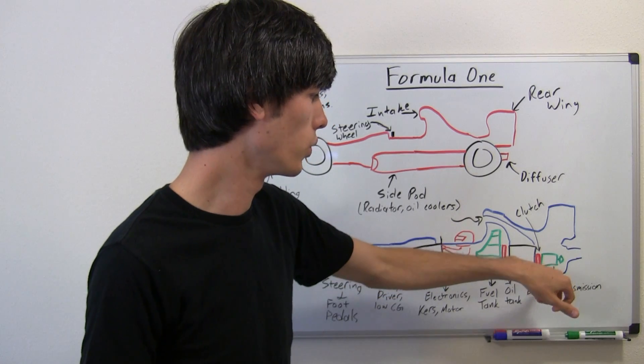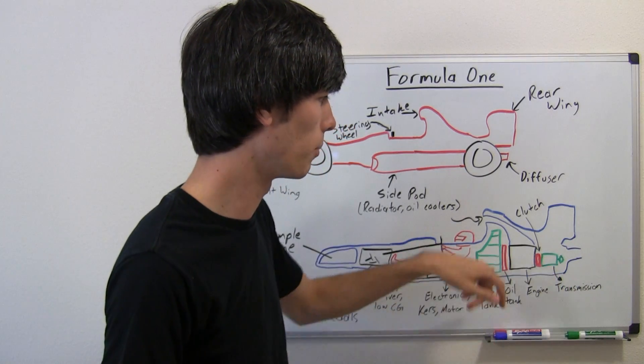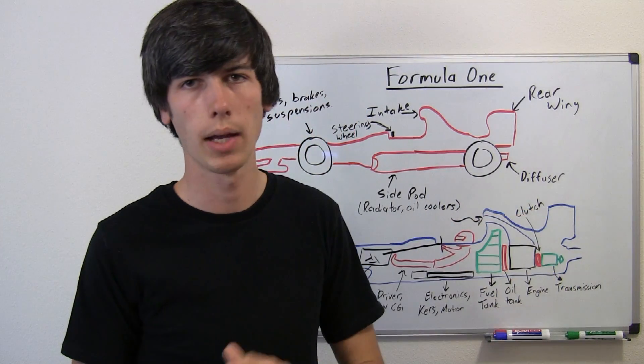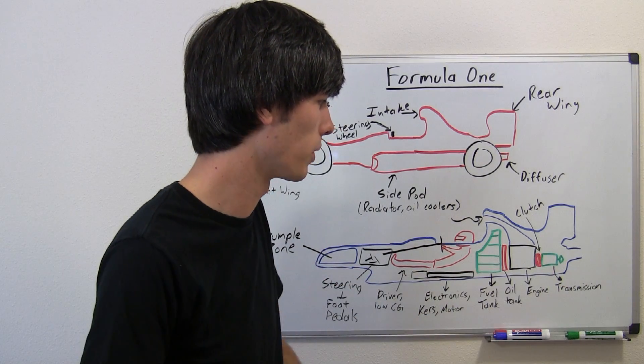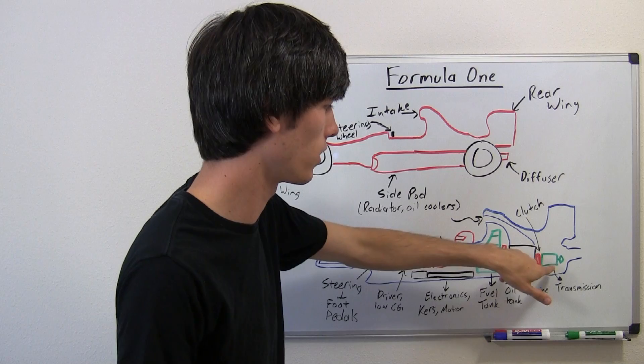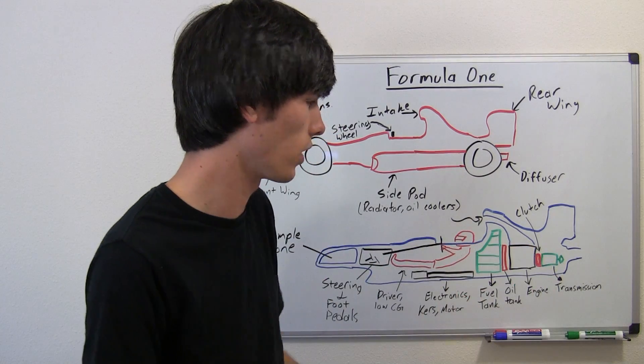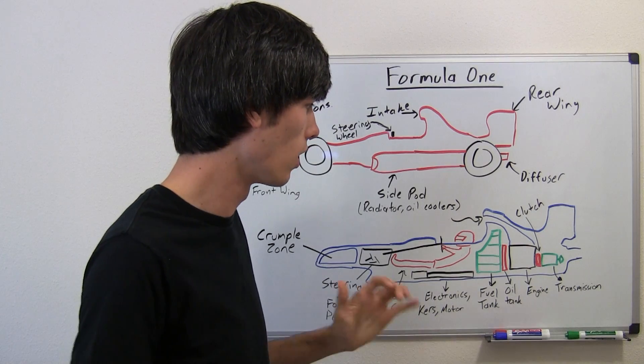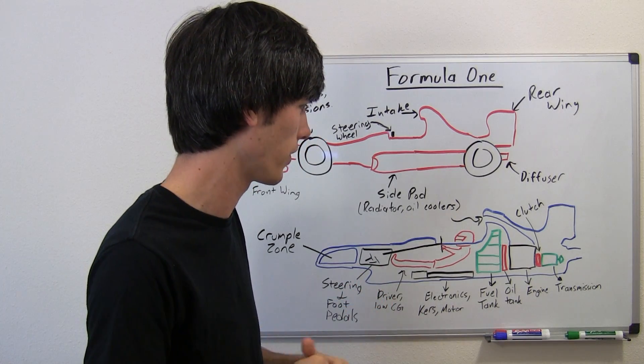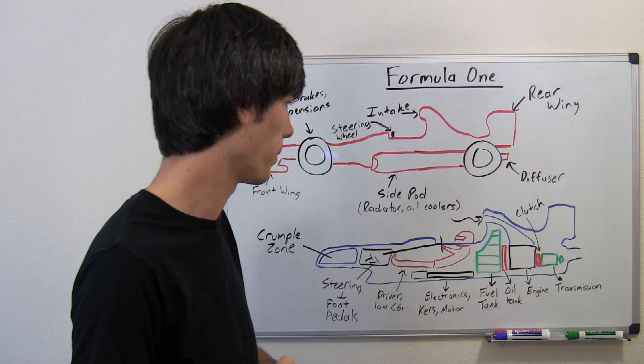Right behind the engine you of course have your clutch. So these are going to be multi-plate clutches which will connect to the transmissions. And then of course you've got your transmissions. They use sequential gearboxes in Formula One. So I'll try to go into that as well. I know a lot of people have requested that, so that'll be a good topic.